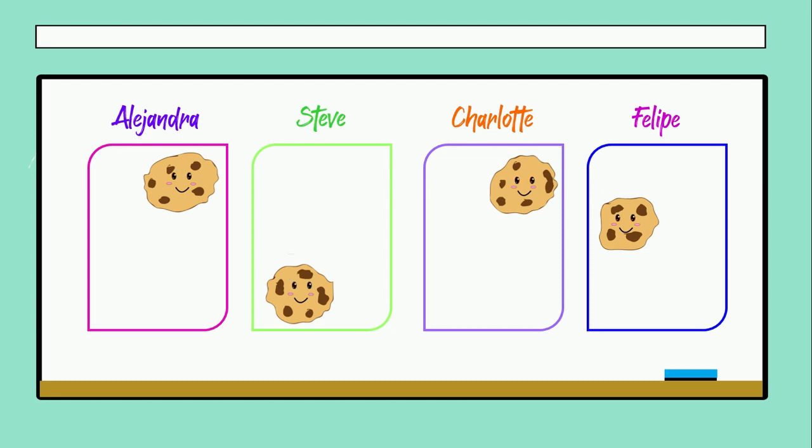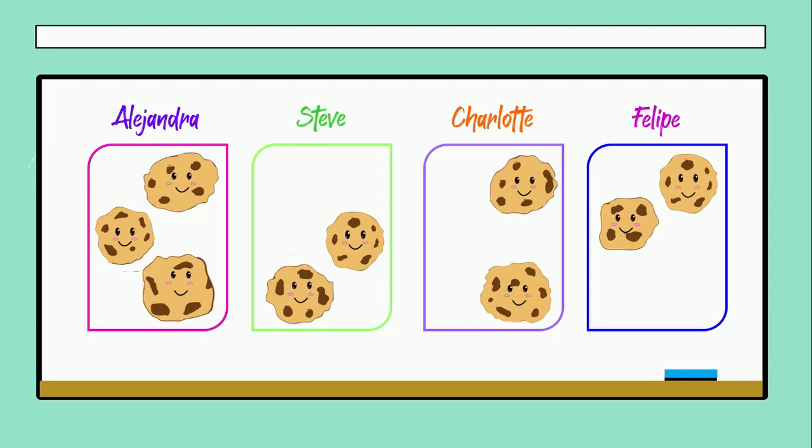Now let's continue with the next. Two for Alejandra, two for Steven, Charlotte, and Felipe. Next, continue. Three for Alejandra, three for Steve, three for Charlotte, and three for Felipe.